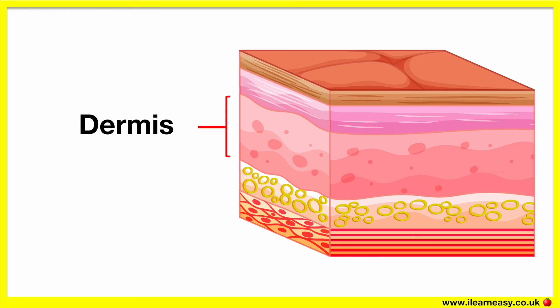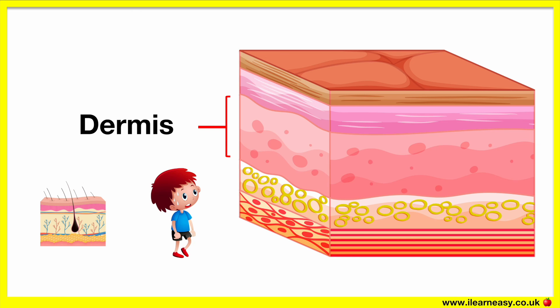The dermis is the second layer of the skin. It contains hair follicles, sweat glands, tough connective tissue and nerve endings. The nerve endings help to send messages to the brain regarding what you've touched, and the brain decides how you'll respond. For example, if you touch something that's very hot, such as a hot pan, then the nervous system will tell the brain to move away from it.